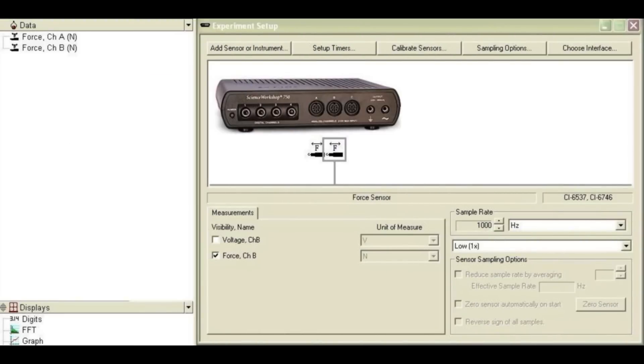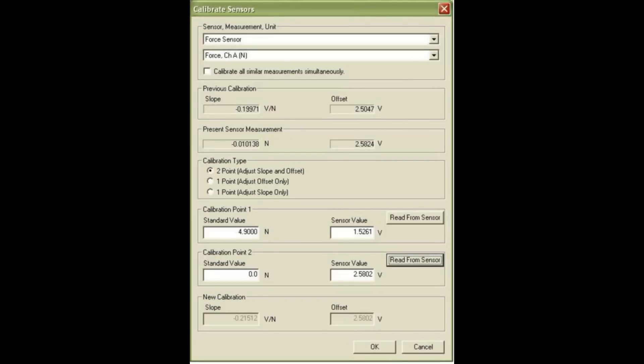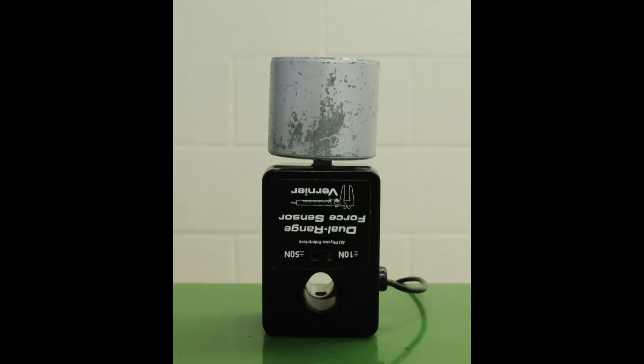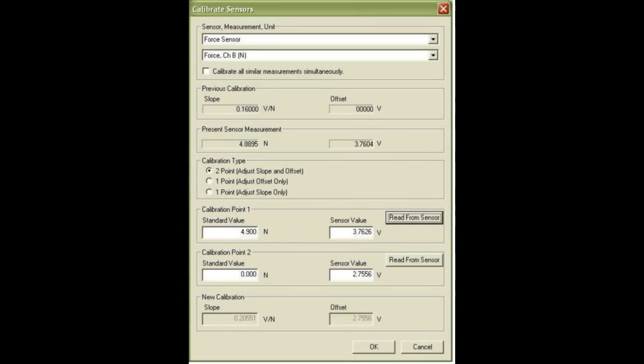Two force sensors will be used and must both be calibrated. Calibrate them in the upward position placing a 500 gram weight on top. After calibrating the first sensor, go to the top of the calibration window and select the second force sensor, repeating the calibration procedure for it.